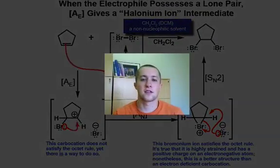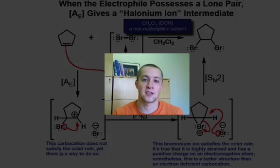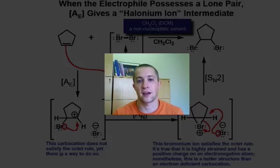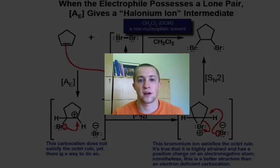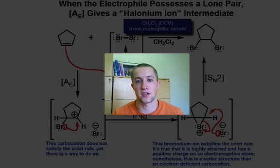To conclude this lesson, electrophilic addition to an alkene can follow one of two pathways. If our electrophile does not have a lone pair, an ACB followed by an ACN step will occur, and we will also generate a carbocation intermediate. However, if our electrophile does have a lone pair, as we saw in the previous example, an ACB step followed by an SN2 step will occur, and we will avoid formation of a carbocation intermediate.